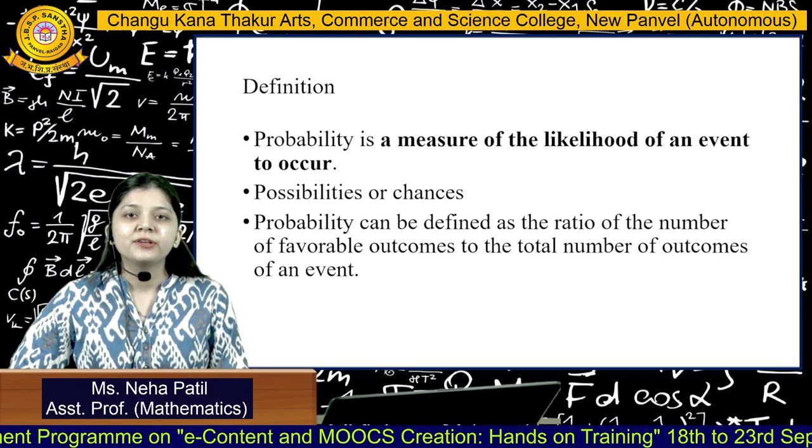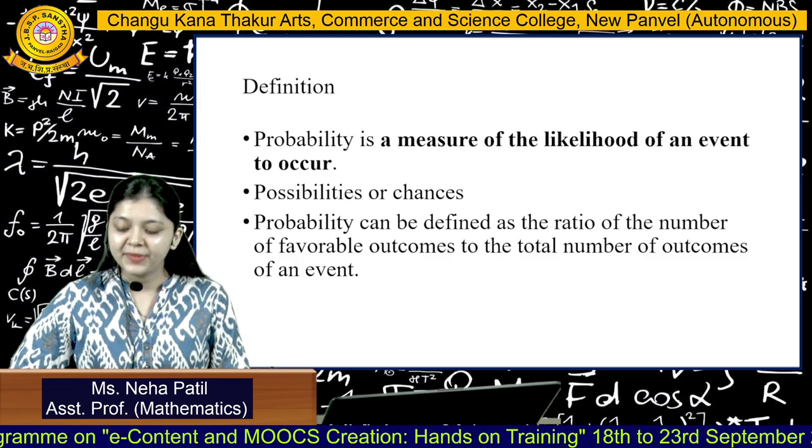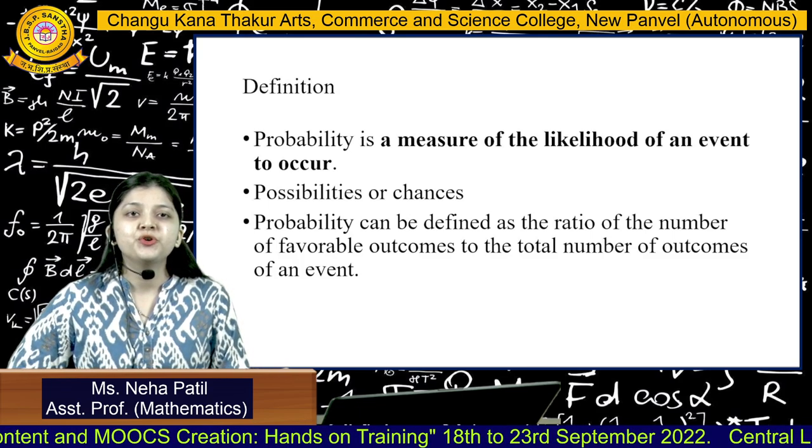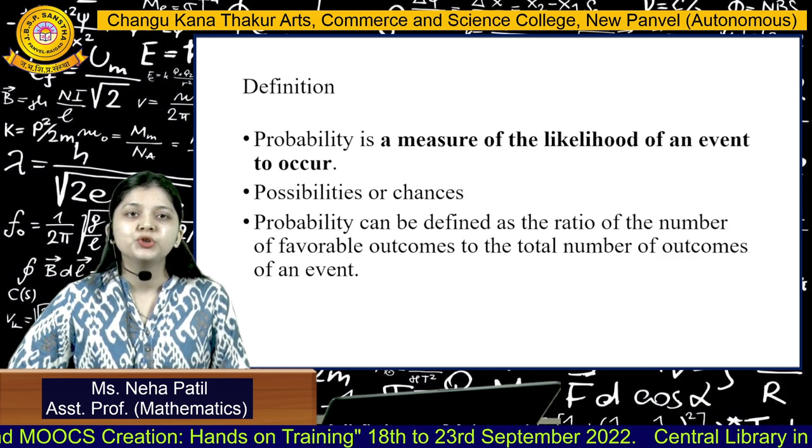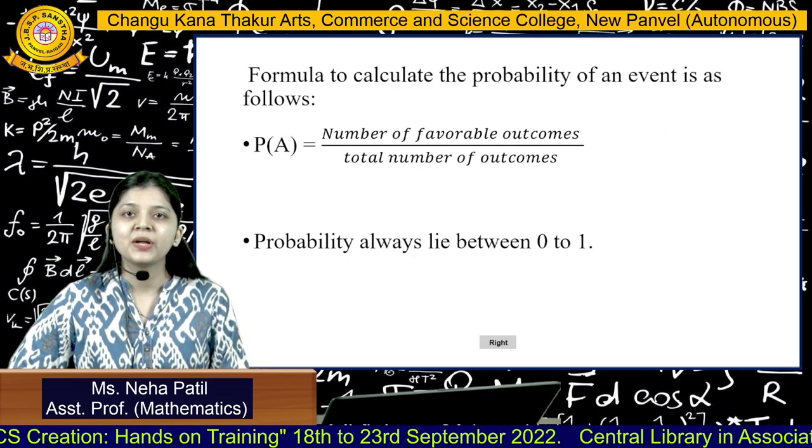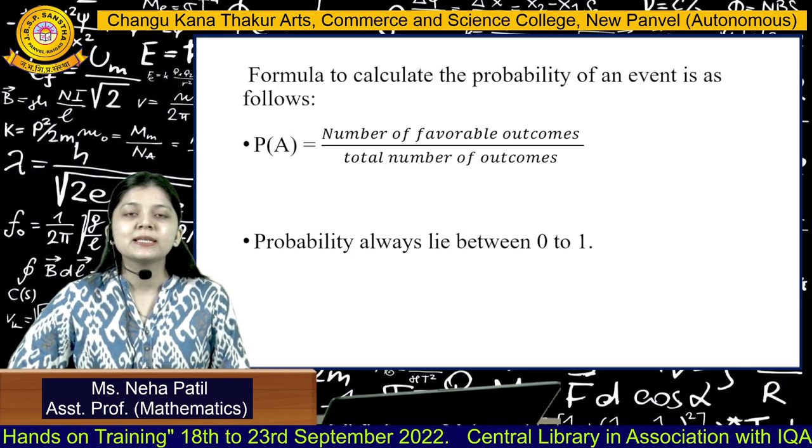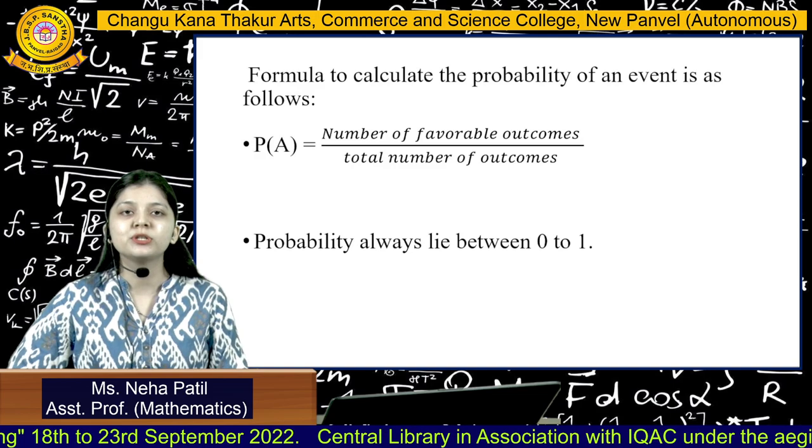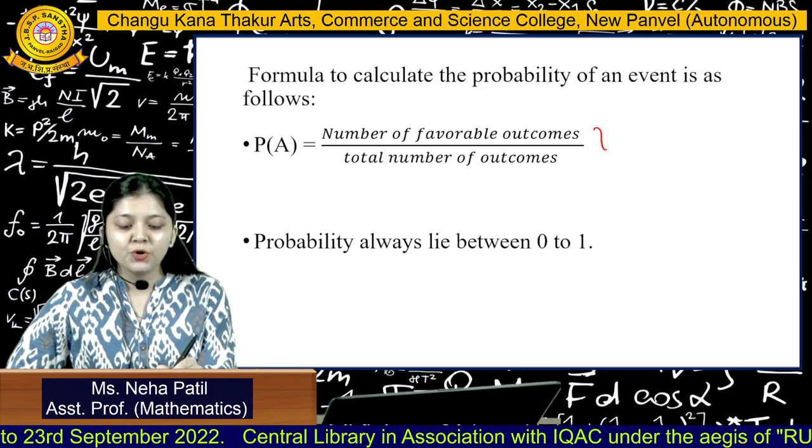Let's see the theoretical definition for probability. Probability can be defined as the ratio of the number of favorable outcomes to the total number of outcomes. The formula for calculating the probability is the ratio: number of favorable outcomes divided by the total number of outcomes.